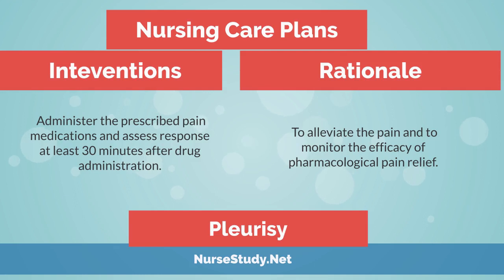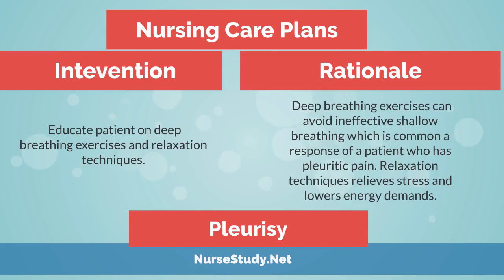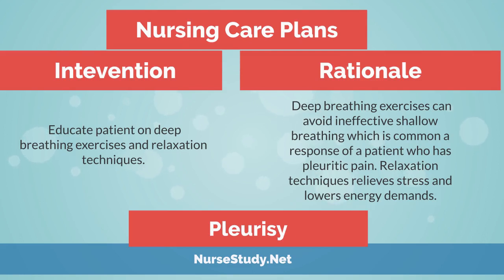Intervention: Administer the prescribed pain medications and assess response at least 30 minutes after drug administration. Rationale: To alleviate the pain and to monitor the efficacy of pharmacological pain relief. Intervention: Educate patient on deep breathing exercises and relaxation techniques. Rationale: Deep breathing exercises can avoid ineffective shallow breathing, which is a common response of a patient who has pleuritic pain. Relaxation techniques relieve stress and lower energy demands.